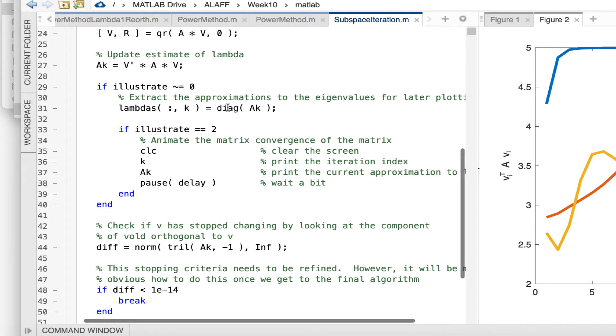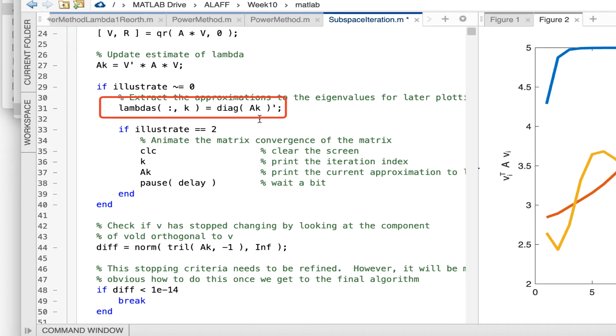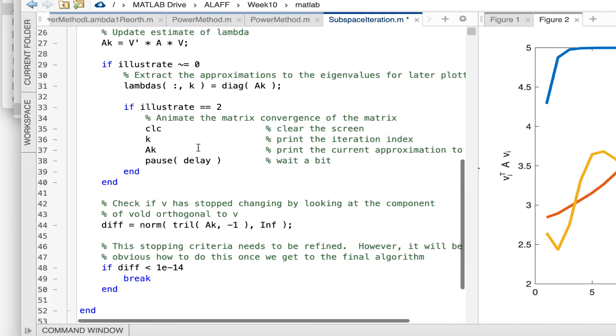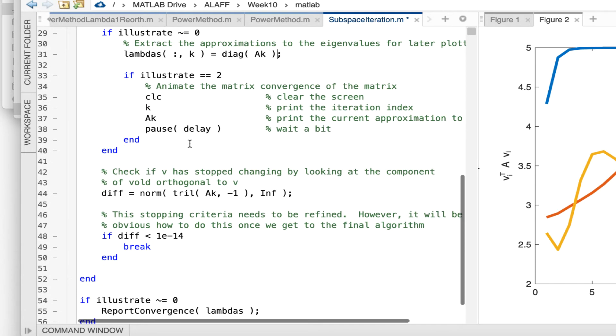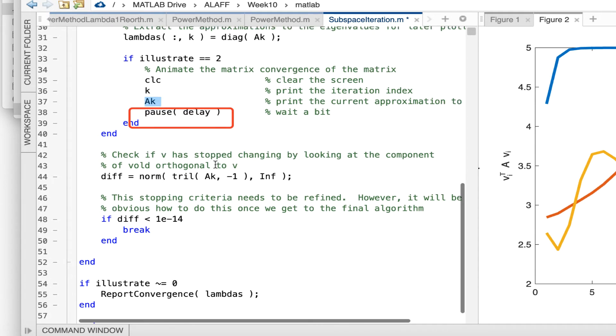And then if we want to illustrate this, what we do is we extract the diagonal elements of matrix AK from that matrix and we place those into a column of array lambdas, which is the array that tracks these things. And then if necessary or if desired, we actually print out these matrices AK to see how the convergence happens.